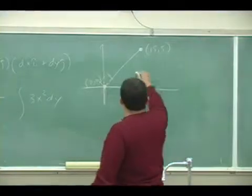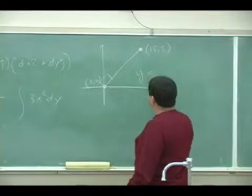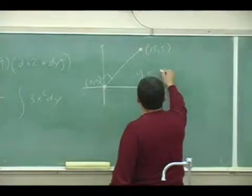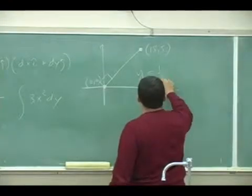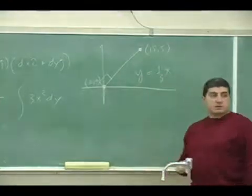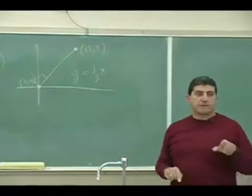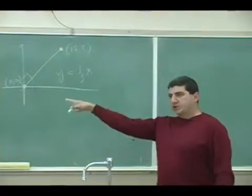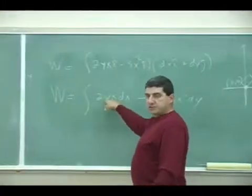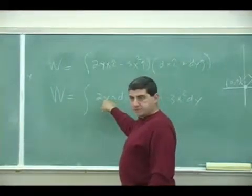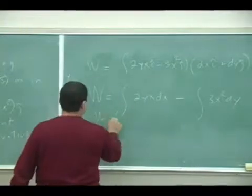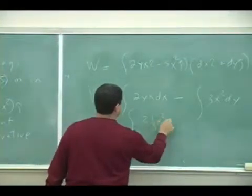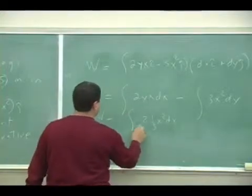So now what would be the equation of the line? Well, the slope of the line is 5 over 15, 1 third X, right? So you are forced to put the equation of the line over there. So I can put Y equals 1 third X, and then it becomes 1 third X squared DX. Now you can integrate it from 0 to 15.